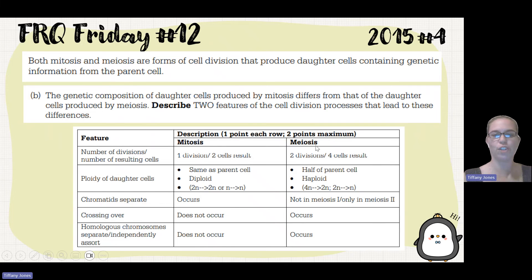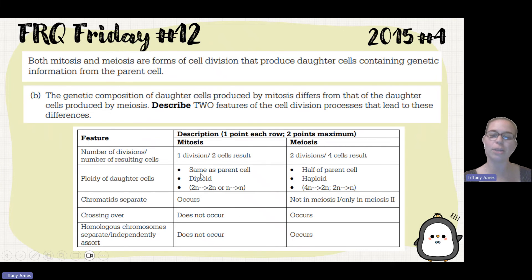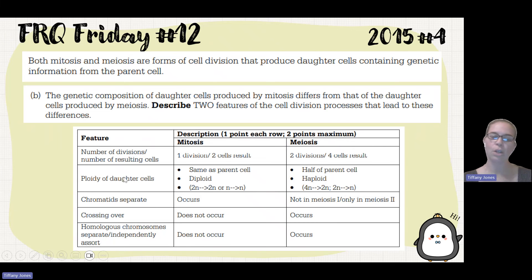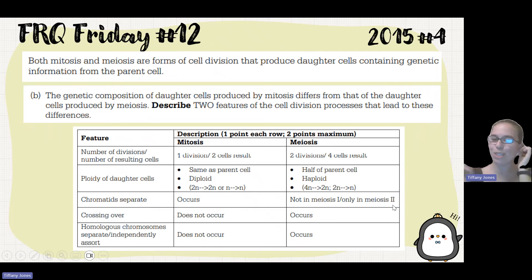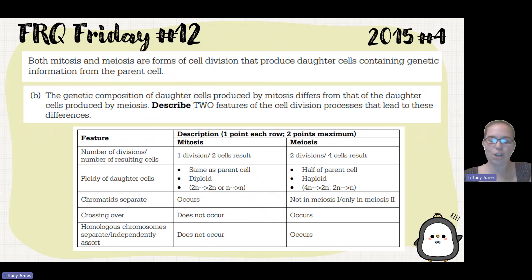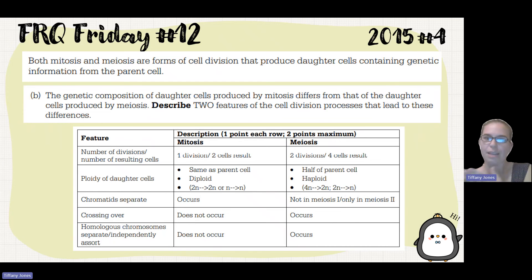Acceptable answers include: number of divisions — mitosis goes through one division, producing two daughter cells, while meiosis goes through two divisions, resulting in four cells. Because mitosis has one division, the cells are diploid and identical to the parent cell; in meiosis, the cells have half the genetic material and are haploid, and they are genetically distinct due to crossing over and independent assortment. Sister chromatids separate in mitosis, but in meiosis I it's homologous chromosomes that separate. Crossing over does not effectively occur in mitosis because chromatids are identical, but in meiosis it produces recombinant chromosomes containing genetic material from both parents.